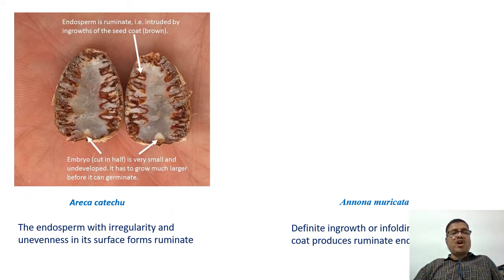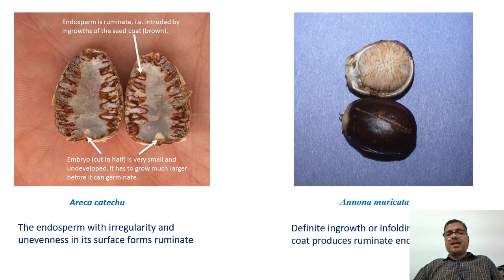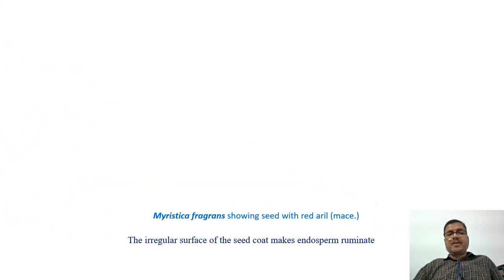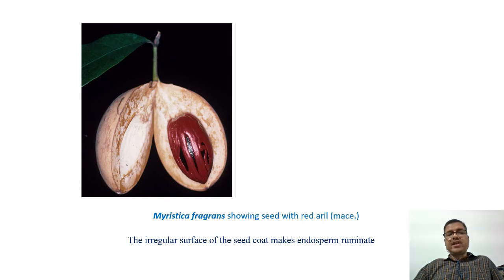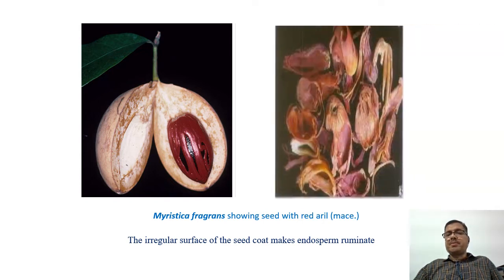In Areca catechu, the endosperm with irregularity and unevenness in its surface forms a ruminate nature. In Annona muricata, definite growth or in-foldings of the seed coat produce ruminate endosperm. In Myristica fragrans, the irregular surface of the seed coat makes the endosperm ruminate; the endosperm in Myristica is called aryl or mace.